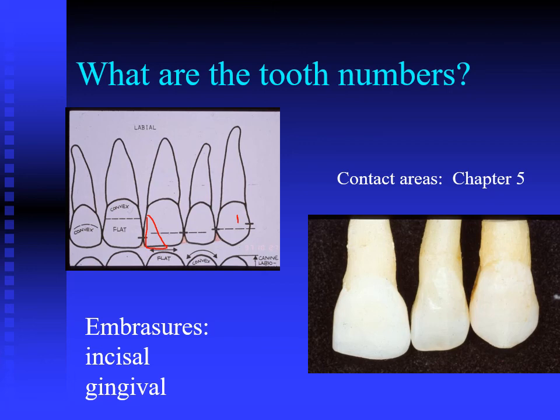The central incisor is the widest tooth of all the anterior teeth at 8.5 mm. It has an interproximal contact area in the incisal one-third. The mesial incisal angle needs to be 90 degrees to the tooth long axis — this is really important. As we go to the lateral incisor, that angle is more rounded, and even more rounded still for the canine. So that 90-degree mesial incisal angle is something you must understand and memorize.